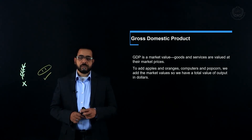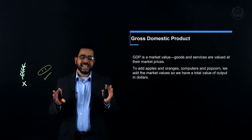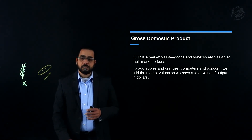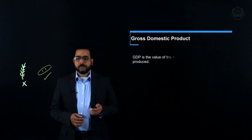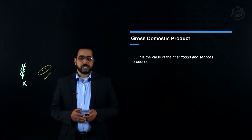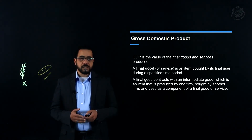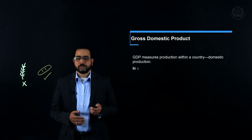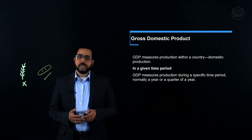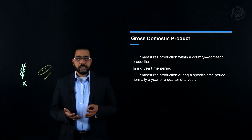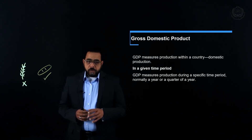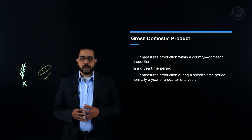GDP is the market value, so it is valued in dollar terms or in currency terms — in Egypt it is calculated in Egyptian pounds, in the US in dollars, and so on. It only includes final goods and services and excludes intermediate goods to avoid double counting. GDP is calculated either on a quarterly basis every quarter or on an annual basis every year. At this point we know that GDP, the Gross Domestic Product, is a way of calculating the production of a country.